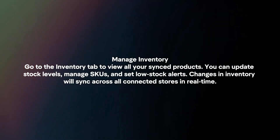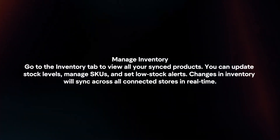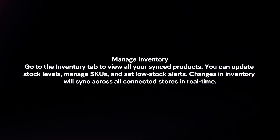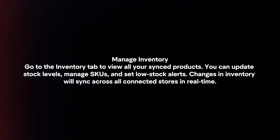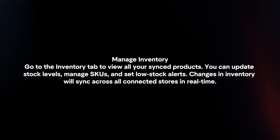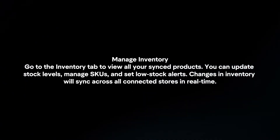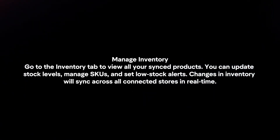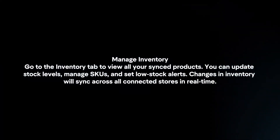Manage inventory. Go to the Inventory tab to view all your synced products. You can update stock levels, manage SKUs and set low stock alerts. Changes in inventory will sync across all connected stores in real time.